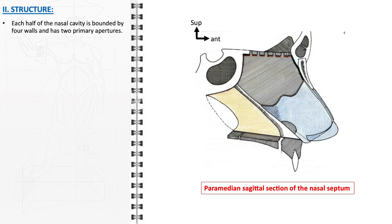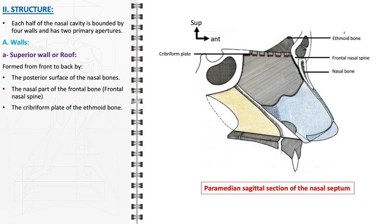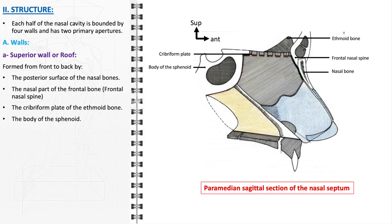We will start our description by focusing on each wall. The superior wall, or roof, begins with the posterior surface of the nasal bones, which forms the foremost part of the roof. Adjacent to this is the nasal part of the frontal bone, prominently featuring the frontal nasal spine. This is followed by the cribriform plate of the ethmoid bone, a critical structure that provides a passage for olfactory nerves from the nasal cavity to the brain. Completing the roof is the body of the sphenoid bone, which forms the rearmost part of the nasal cavity's superior wall.